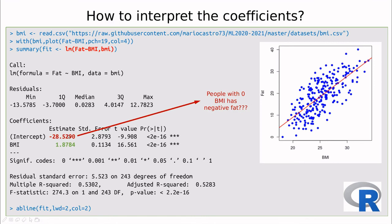So in most of the cases, I'm going to skip the interpretation of that. And what about the slope? This is more interesting. This means that every point in BMI that you increase, that represents 2% increase in body fat.